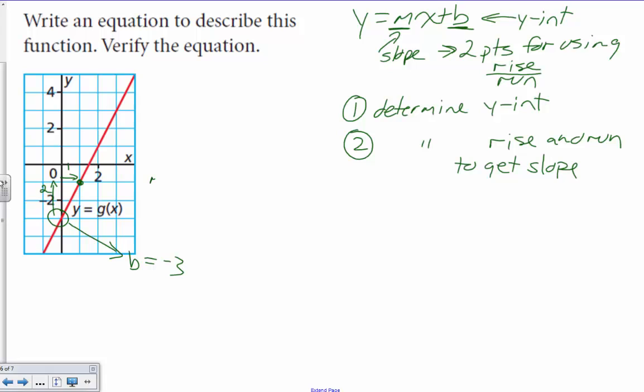M, or slope, equals 2 over 1, which simplifies to 2.